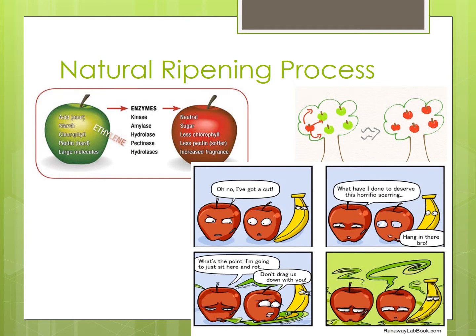Natural fruit ripening is an uncontrolled positive feedback process. As we all know, fruit ripens to become more attractive to potential consumers. Therefore, it is proactive for the fruit to all be ripe at the same time. As the fruit begins to ripen, it releases ethylene to trigger the ripening of surrounding fruit. Ethylene stimulates its own production and suppresses the production of auxin, a chemical that suppresses ethylene production.